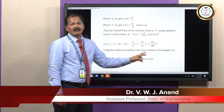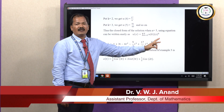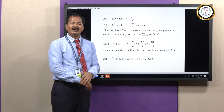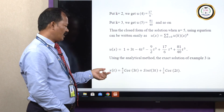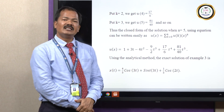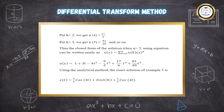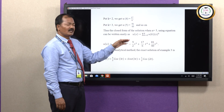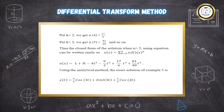Substituting all values of U of 0, U of 1, U of 2, U of 3, U of 4, U of 5 into the series u of x equals sigma from k equals 0 to infinity of U of k times x to the power k, we get the power series solution: u of x equals 1 plus 3t minus 4t-squared minus 9 over 2 t-cubed plus 17 over 6 t to the power 4 plus 81 upon 4 t to the power 5, and so on. This is the differential transform solution, and it corresponds to the exact solution x of t equals 4 over 5 cos 3t plus sin 3t plus 1 over 5 cos 2t. You can verify that some terms are one and the same.